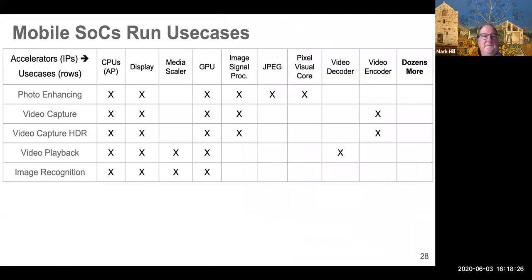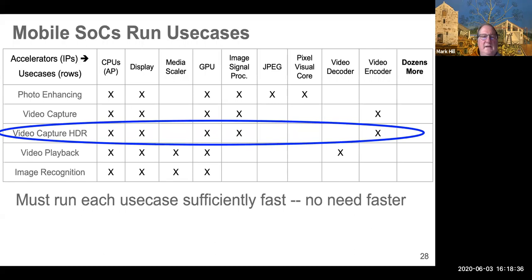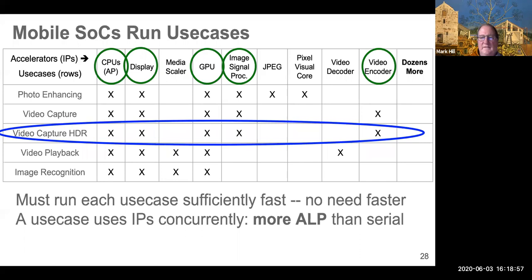So here's what a mobile SOC might do. Each of these horizontal lines represents a different use case. In any given time, you're concentrating on one use case, like the video capture we just showed, and the Xs with the different IP blocks show which ones are active. So even if you had 42 IP blocks, it's pretty unlikely they're all active for a given use case. But presumably, there are some use case they're important for. Otherwise, they shouldn't have been put on there.